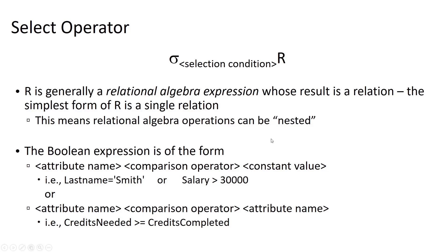Our Boolean expression, or selection condition, has the general form of either an attribute name, a comparison operator, and a constant value — or an attribute name, a comparison operator, and the name of some other attribute. So we can evaluate the value of an attribute against a constant. For example, looking for employees with a last name of Smith, or employees with a salary greater than $30,000.